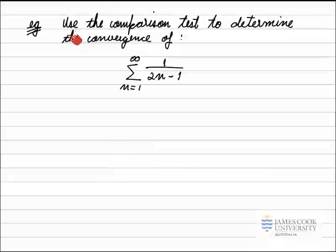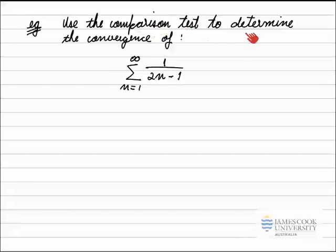In this example, we've been asked to use the comparison test to determine the convergence of this series, the sum from n equals 1 to infinity, 1 over 2n minus 1. So we remember the comparison test.